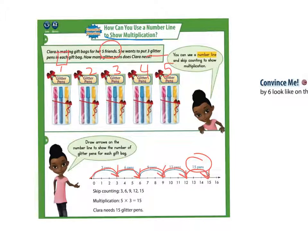It's just like skip counting. 3, 6, 9, 12, 15. Skip counting by threes. 5 times 3 equals 15. So Clara needs 15 glitter pens.